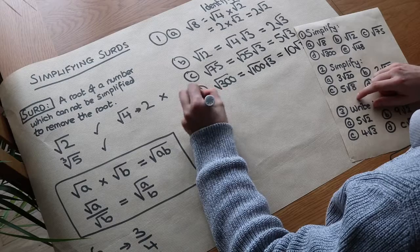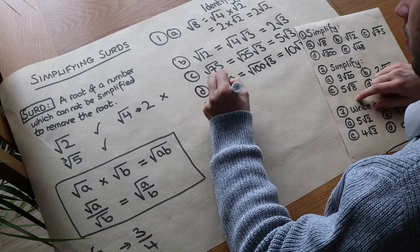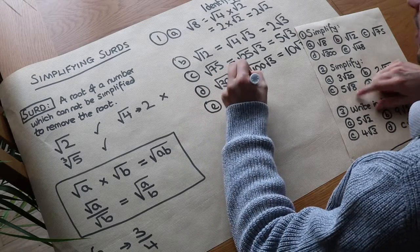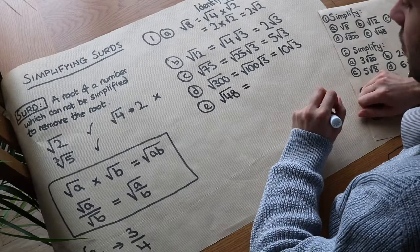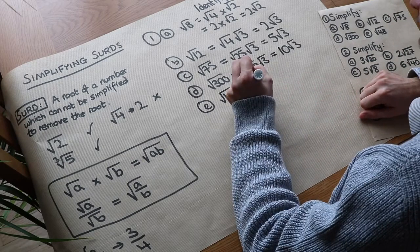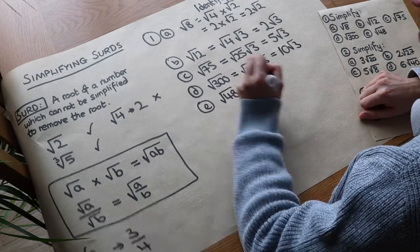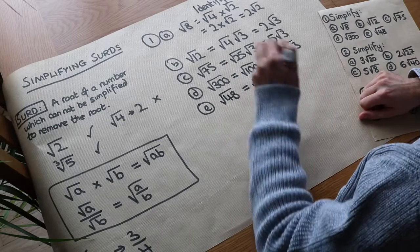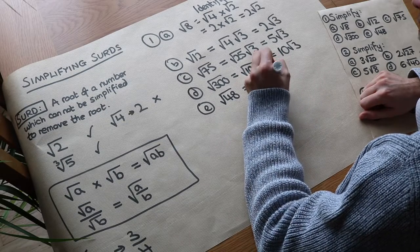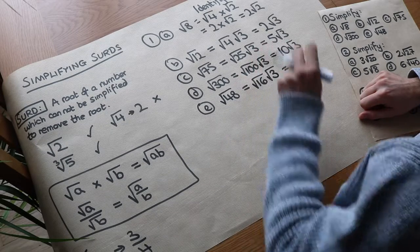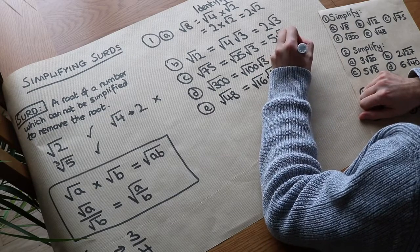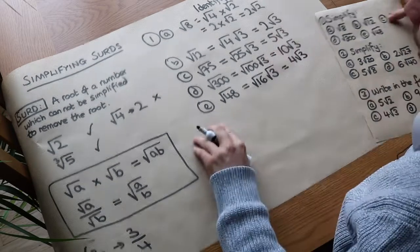What about the square root of 48? The biggest square number that goes into 48 is 16. So we write root 16 times root 3, since 16 times 3 is 48. That becomes 4 root 3.